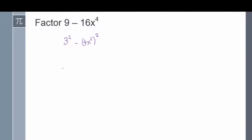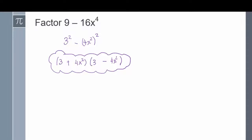From here, we can factor this difference of squares. Write 3 once in each factor. Write 4x squared once in each factor. Put a plus in one and a minus in the other. 3 times 3 gives me 9. Positive 4x squared times negative 4x squared gives me negative 16x to the power of 4. So 9 minus 16x to the power of 4 factors into the quantity 3 plus 4x squared times the quantity 3 minus 4x squared.